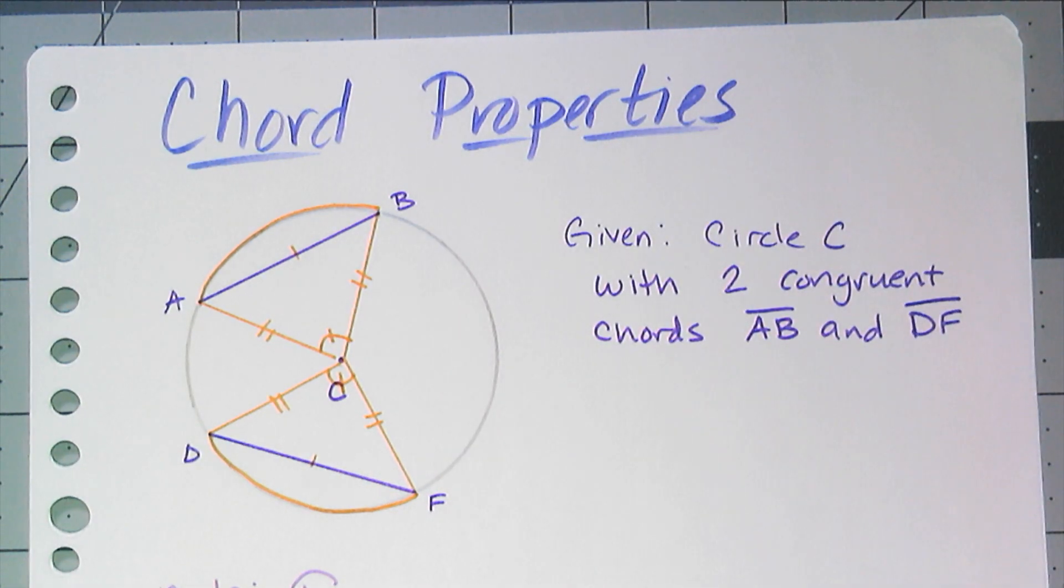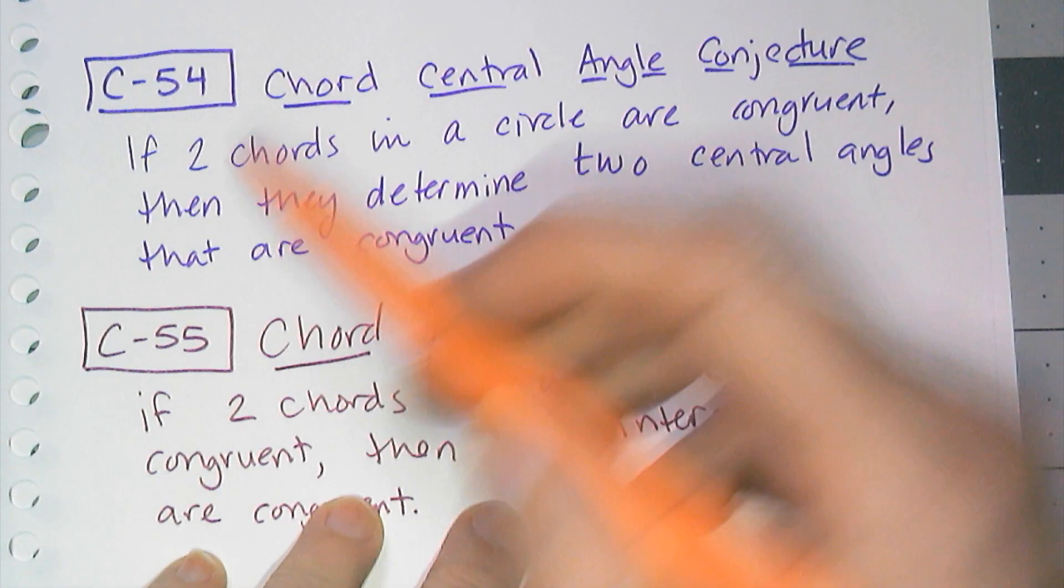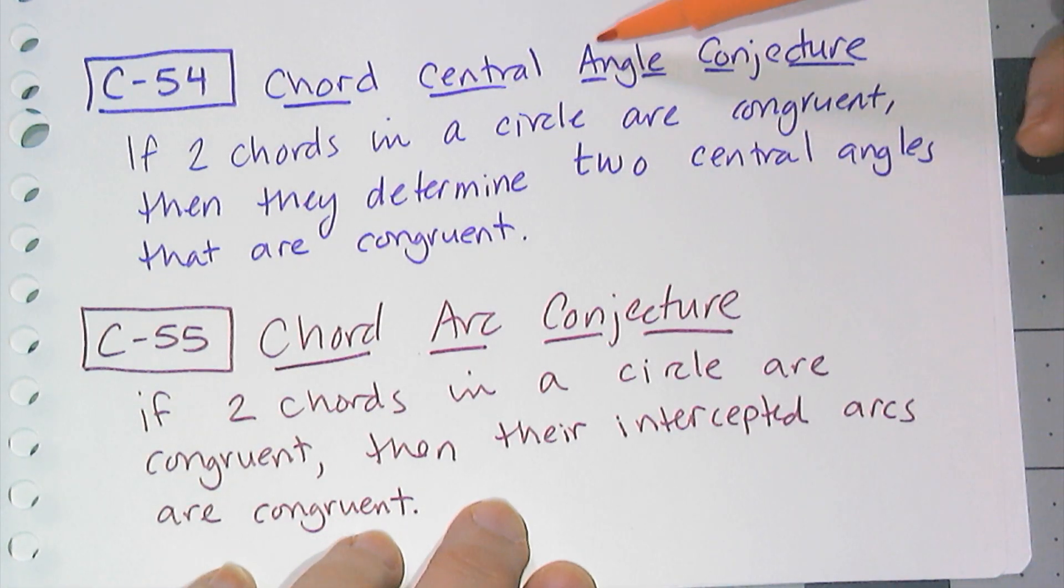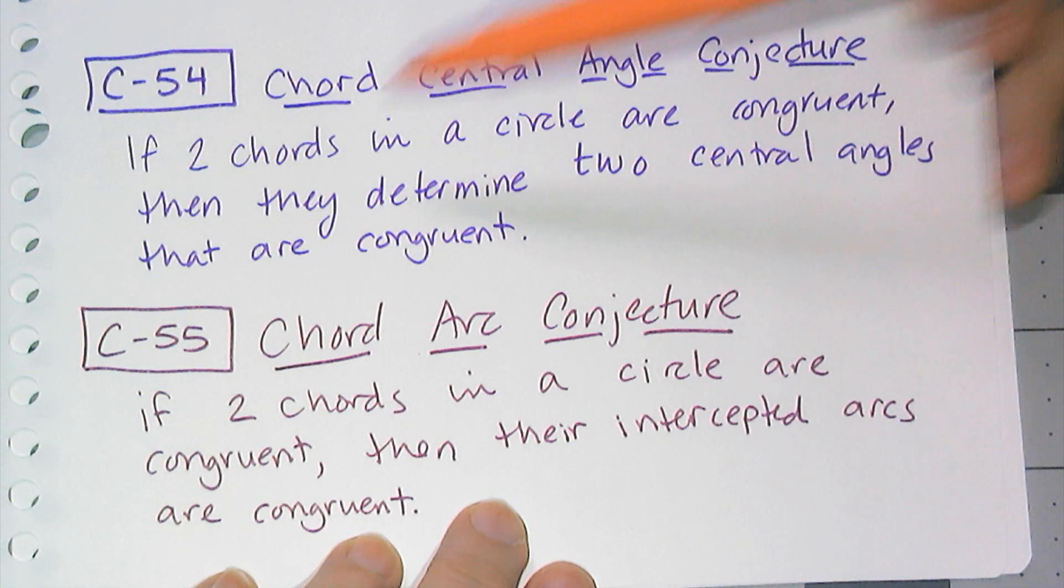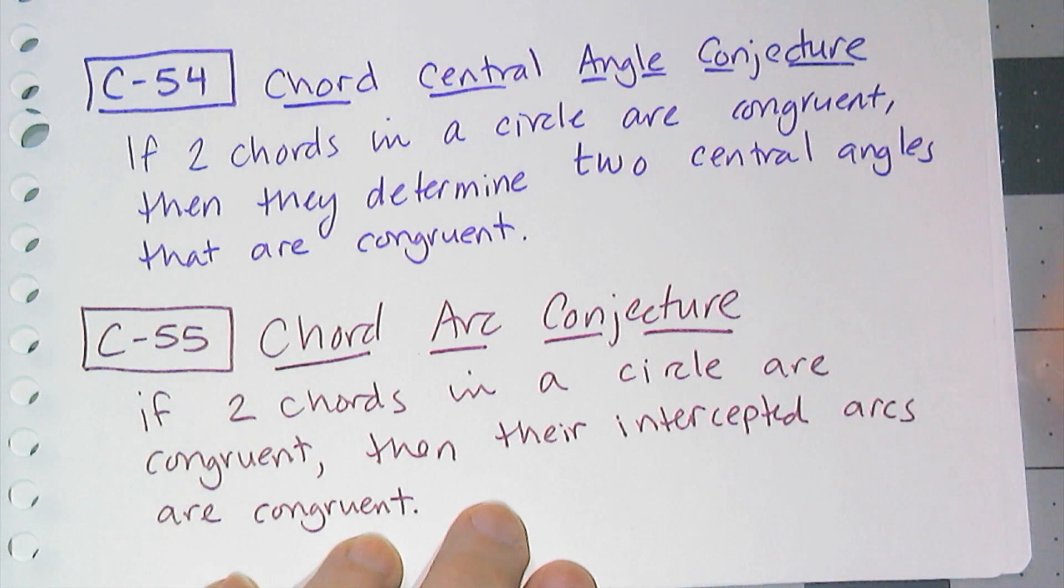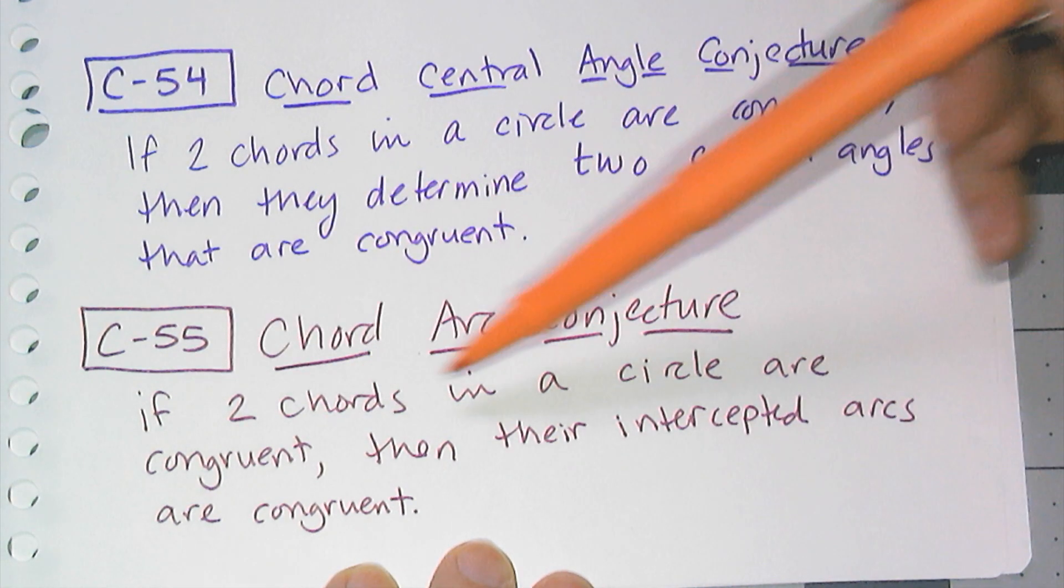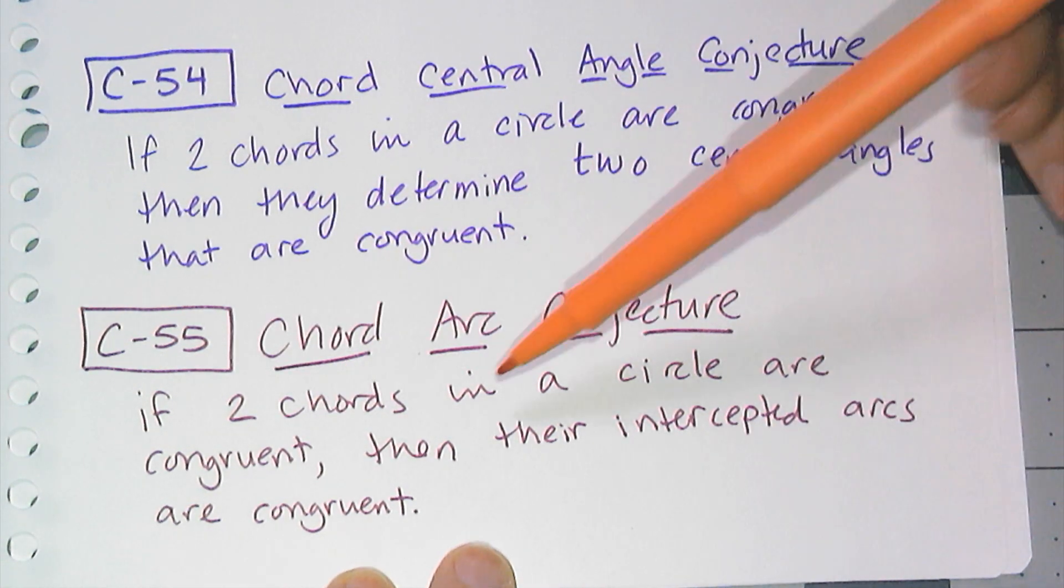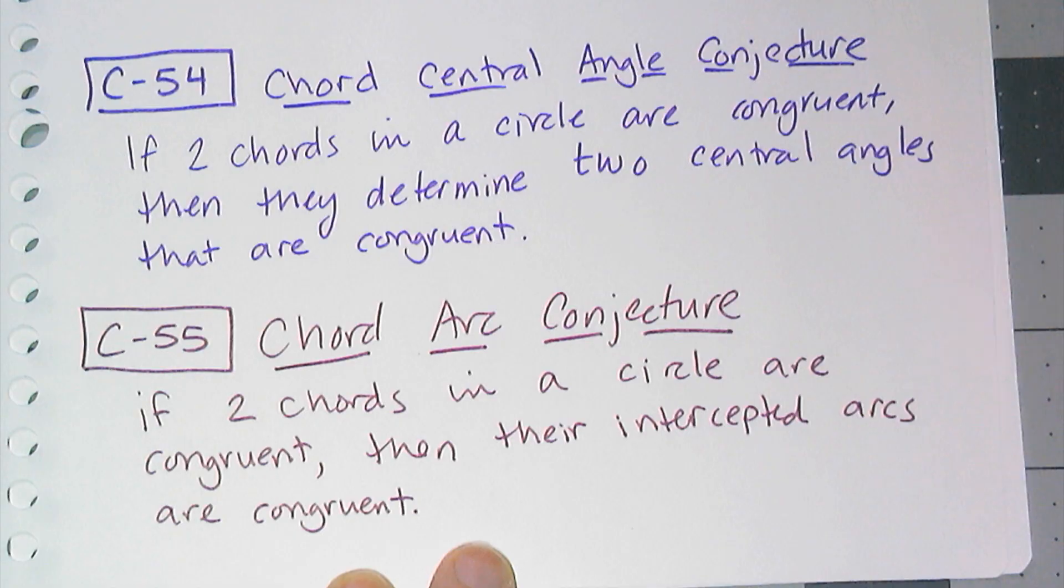So this leads us to our first two circle conjectures. So our first two circle conjectures are C54, chord central angle conjecture. It says if two chords in a circle are congruent, then they determine two central angles that are congruent, which we established by the side-side-side triangle congruency. And the chord arc conjecture says if two chords in a circle are congruent, then their intercepted arcs are congruent, which we established by corresponding parts of congruent triangles and the definition of the measure of an arc.